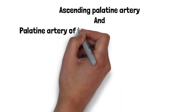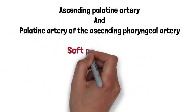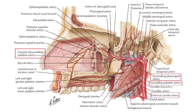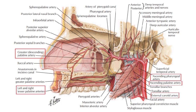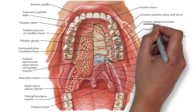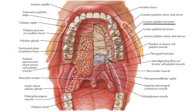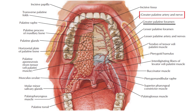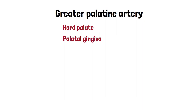The ascending palatine artery of the facial artery and the palatine artery of the ascending pharyngeal artery mostly supply the soft palate region. The greater palatine artery, after descending into the palatine canal, gives origin to the lesser palatine artery and then continues through the greater palatine foramen into the inferior surface of the hard palate. The greater palatine artery passes forward on the hard palate and then leaves the palate through the incisive canal into the medial wall of the nasal cavity where it terminates. It is a major supply of the hard palate and also supplies the palatal gingiva.